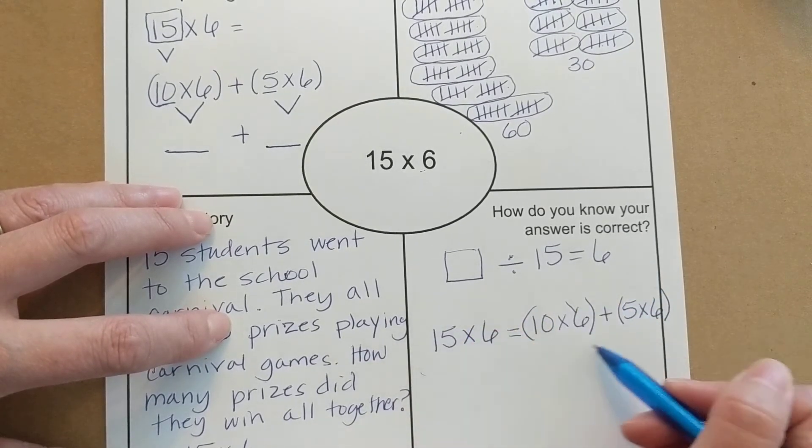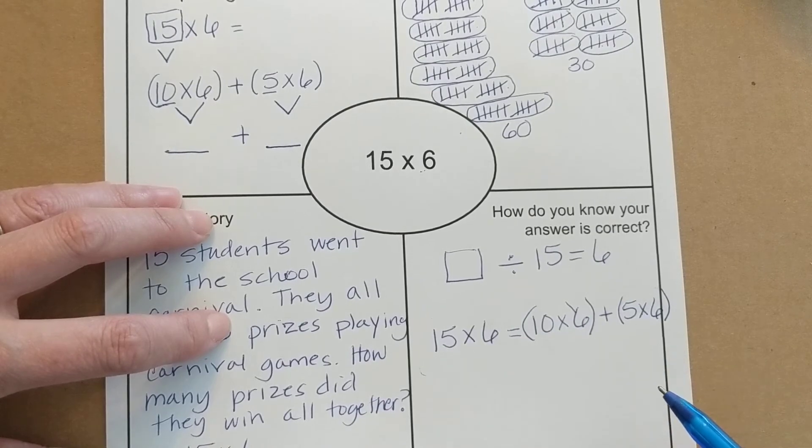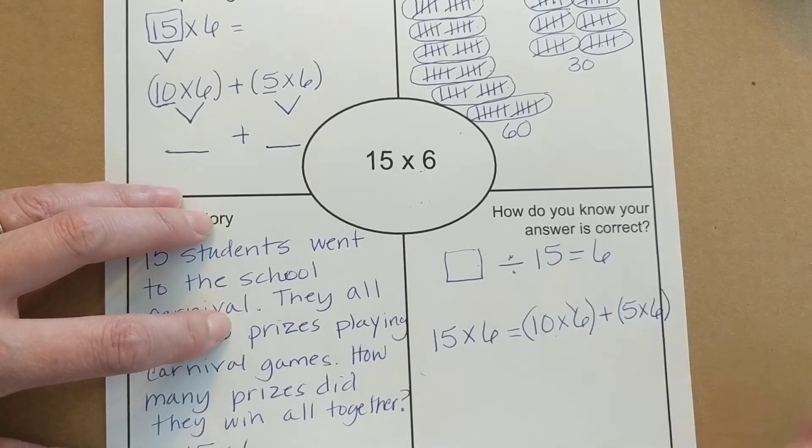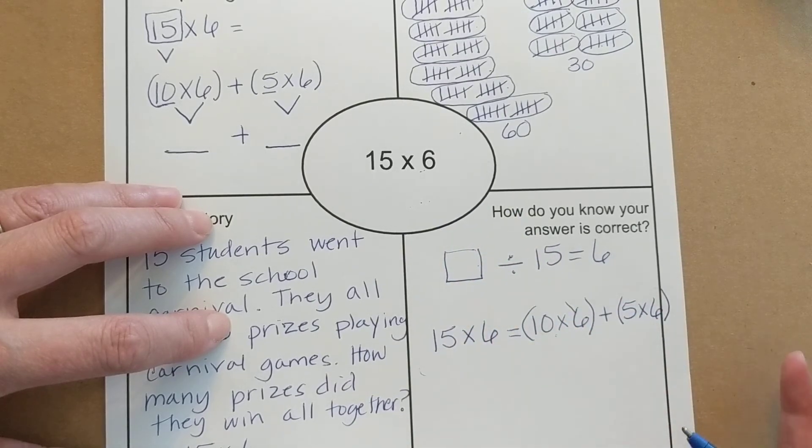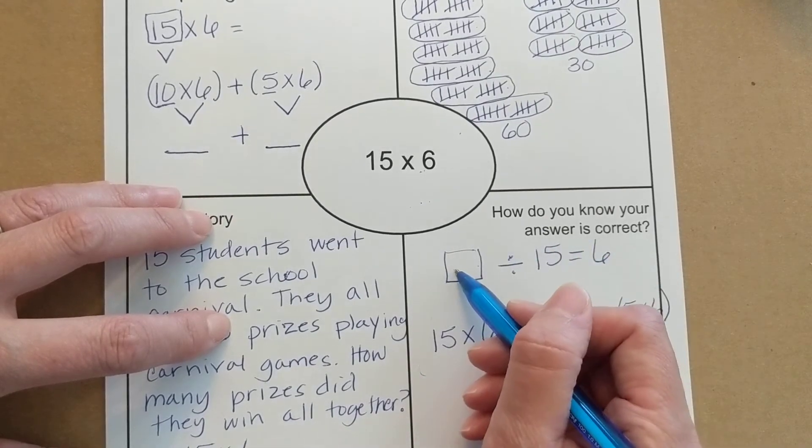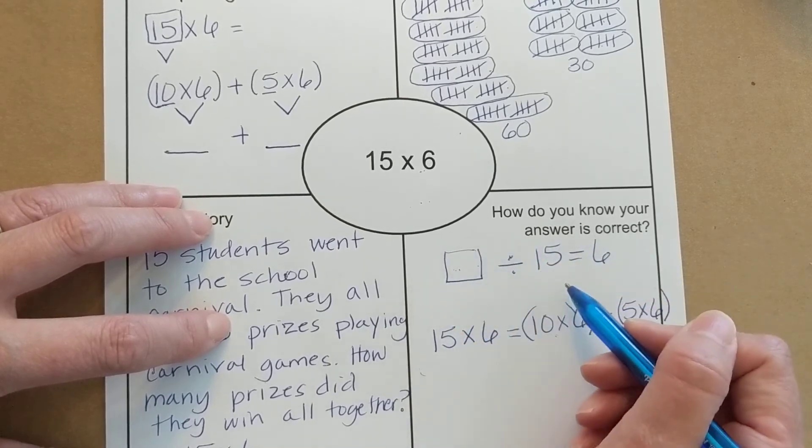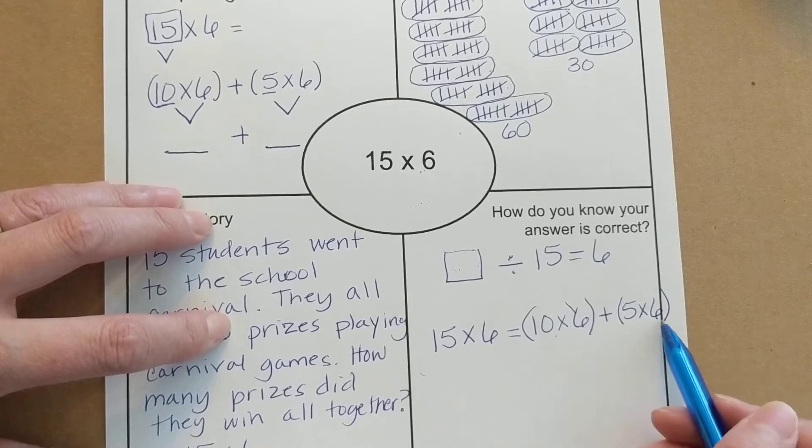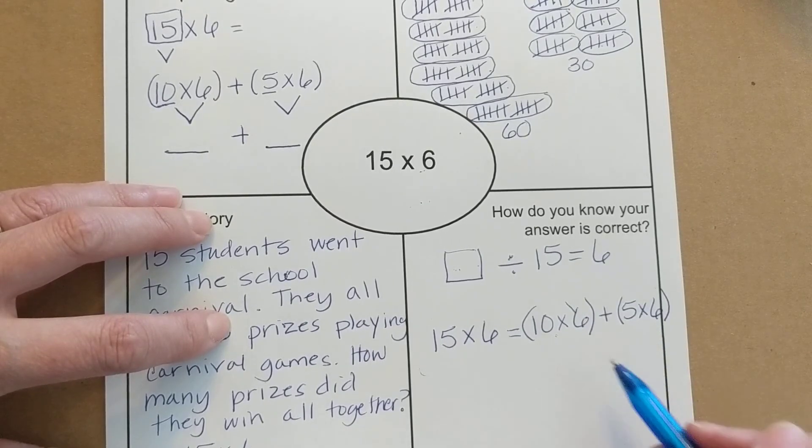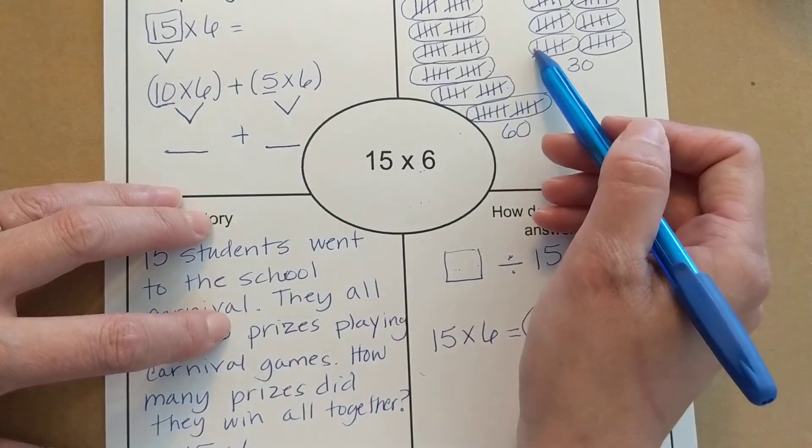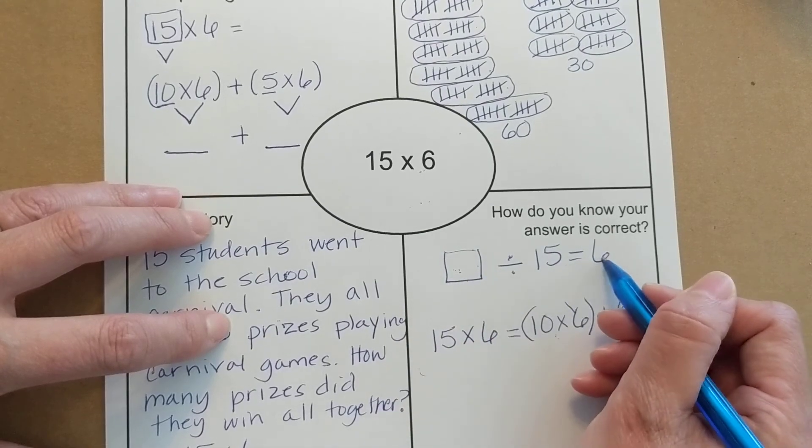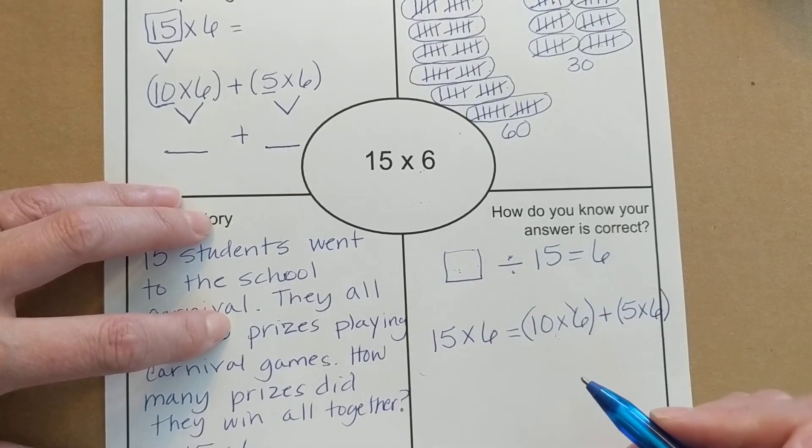We've already done this work up there but how do you know it's correct? Usually we check it by using a fact family just like when you add you check your work by subtracting or when you subtract you check your work through addition. So this is one way. See if that big number fits into this problem. Another way, I was trying to show you, you could just draw a picture to make sure that you understood, but you've already done models up here.